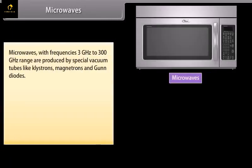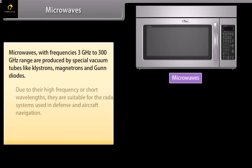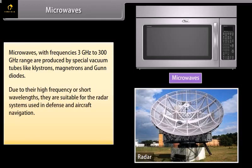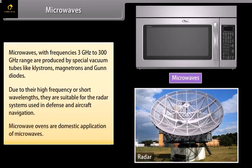Microwaves. Microwaves with frequencies 3 GHz to 300 GHz range are produced by special vacuum tubes like klystron, magnetrons and Gunn diodes. Due to their high frequency or short wavelengths, they are suitable for the radar systems used in defense and aircraft navigation. Microwave ovens are domestic application of microwaves.